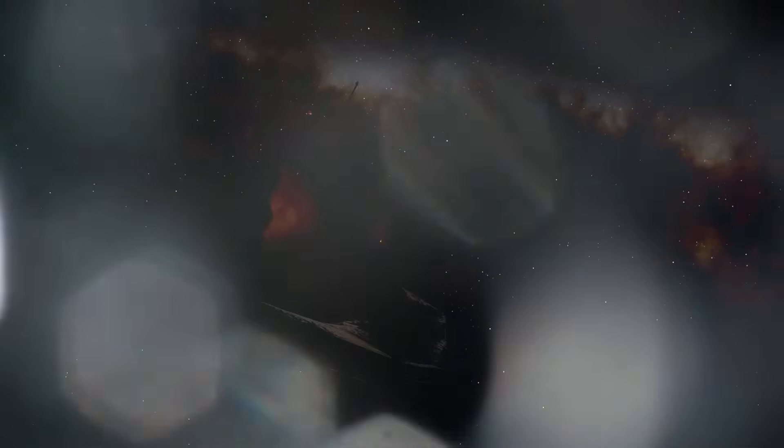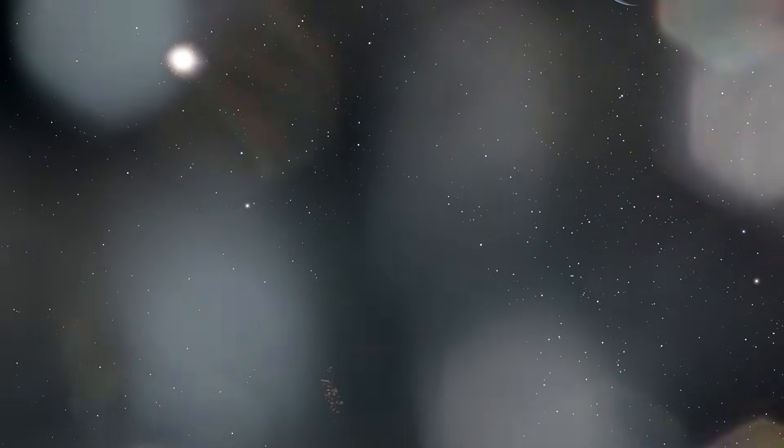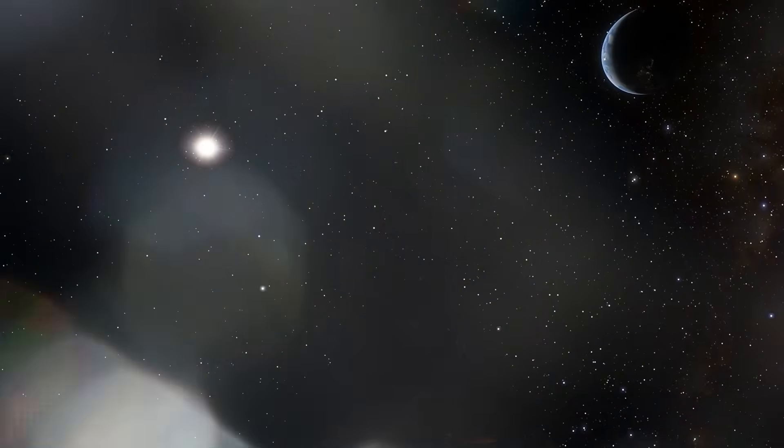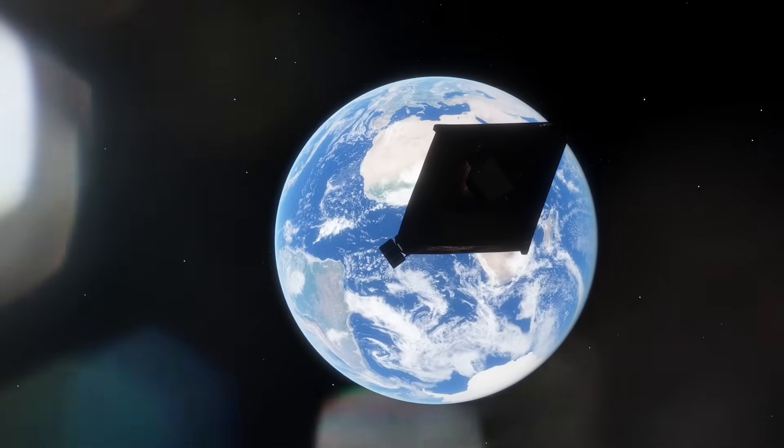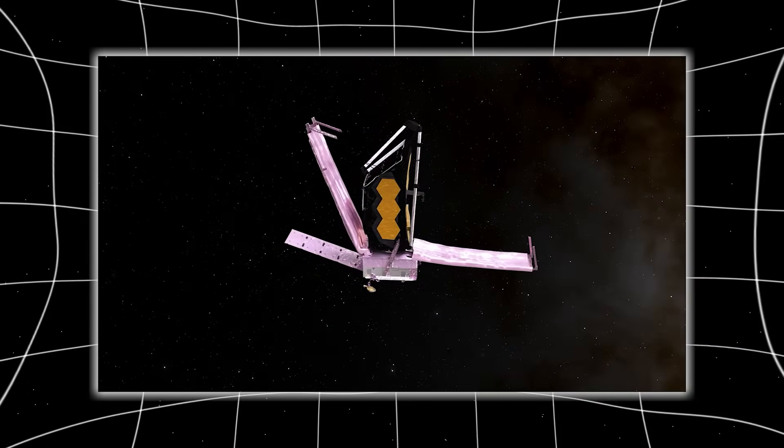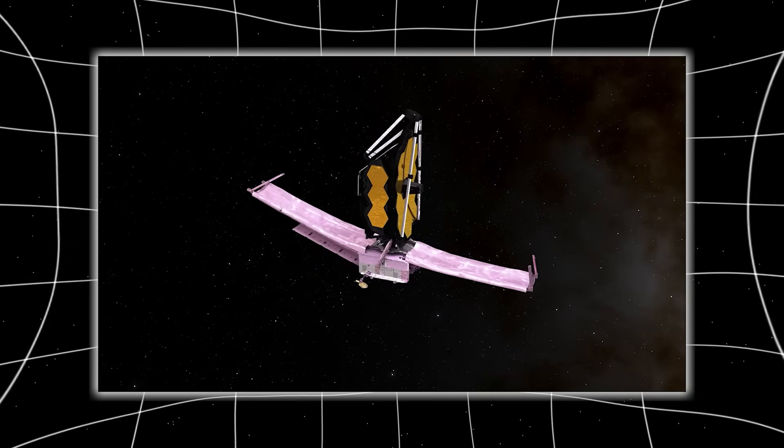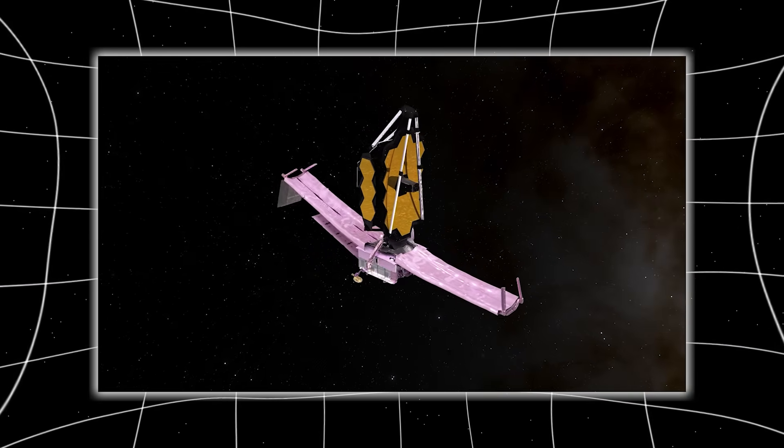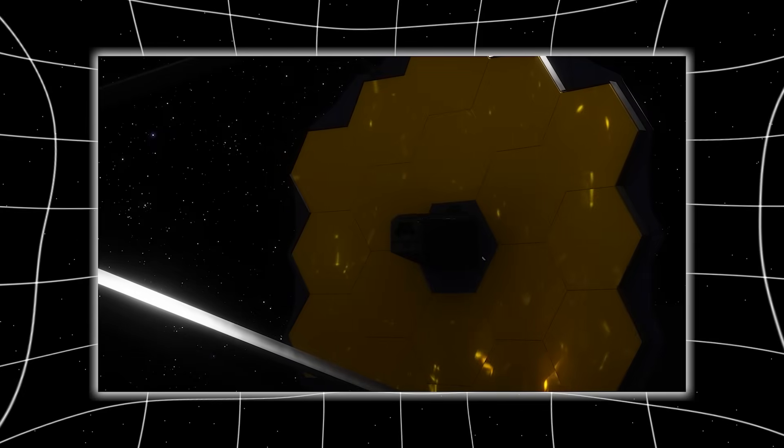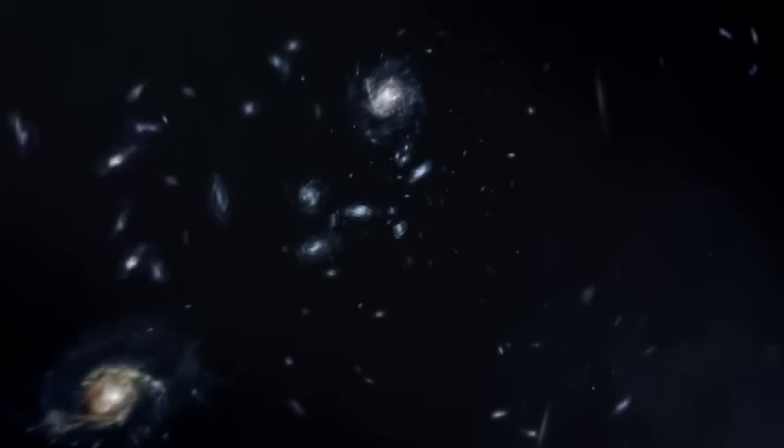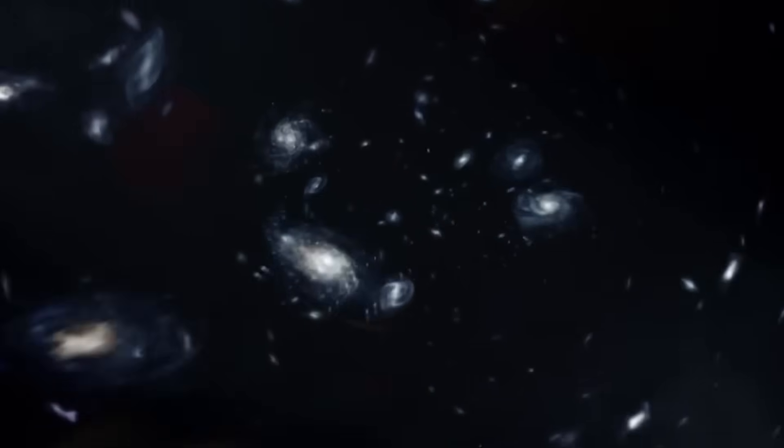The James Webb Space Telescope wasn't built to casually look around. It was built like a time machine, crafted to peel back the layers of the universe and let us peer into the very beginnings of existence. When it turned toward a seemingly unremarkable patch of space, it detected something bizarre. But the redshift told a very different story.